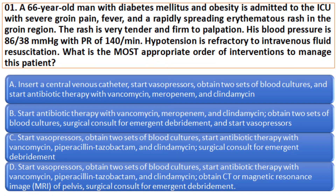Option 3: Start vasopressor, blood culture, antibiotic therapy with vancomycin, piperacillin-tazobactam, and clindamycin, then surgical consult. Option 4: Start vasopressor, obtain two sets of blood culture, start antibiotic therapy with vancomycin, piperacillin-tazobactam, and clindamycin, obtain CT or MRI of pelvis, and a surgical consult for emergency debridement.